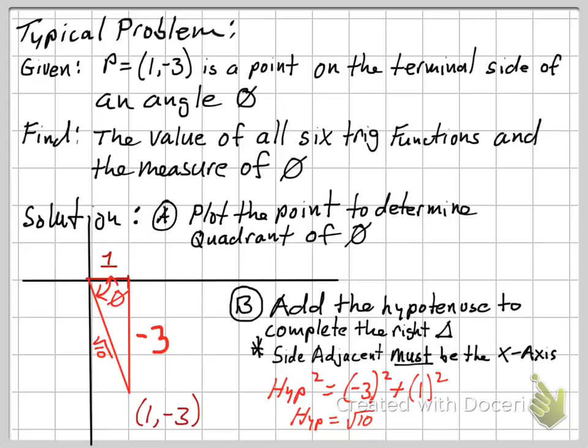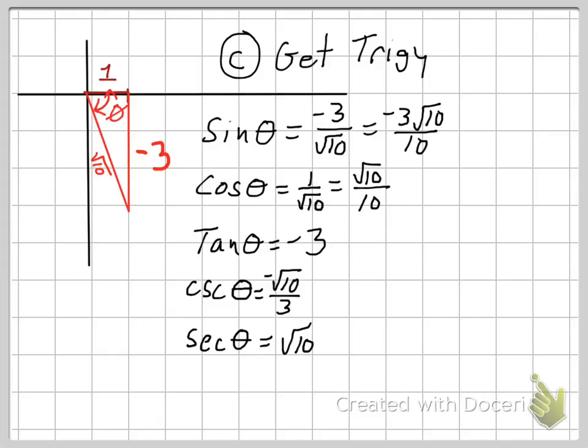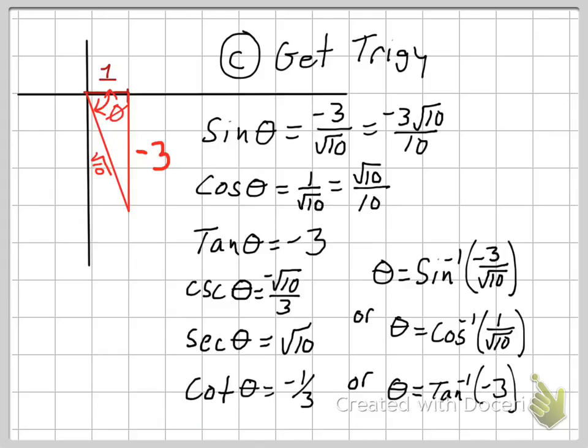And you can see we have a right triangle where we know all three sides. Now, once we have all three sides, then we can easily get all six of our trig functions.